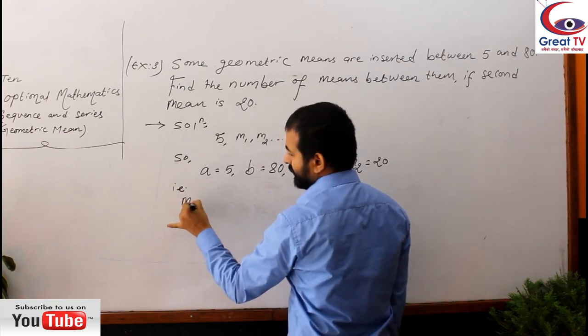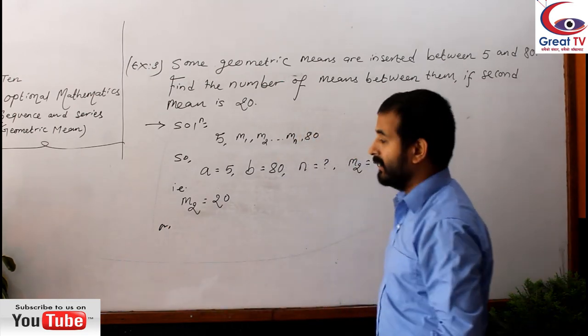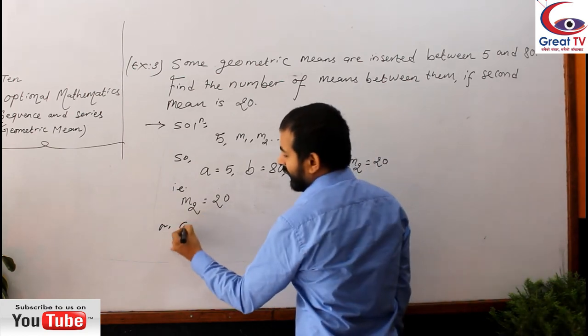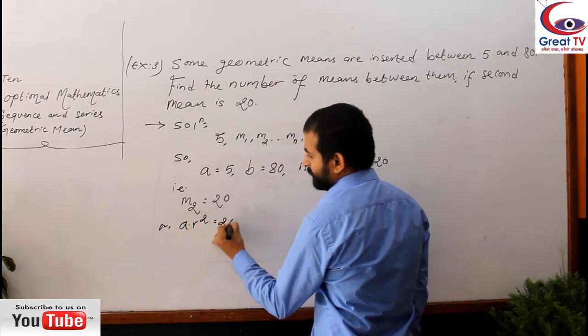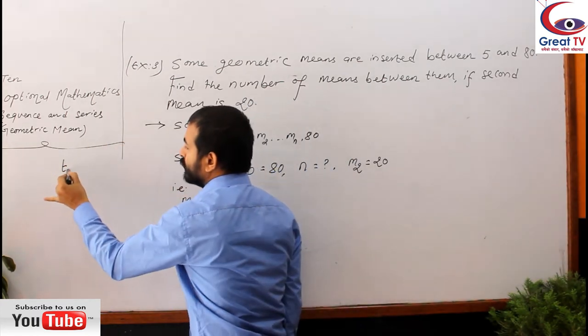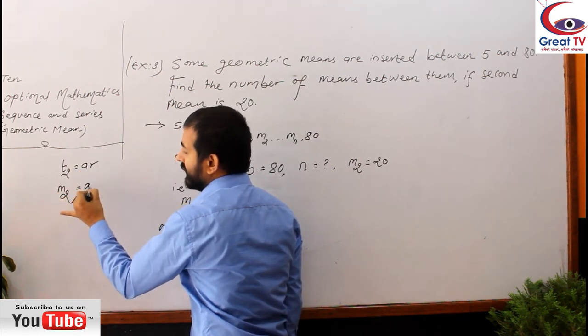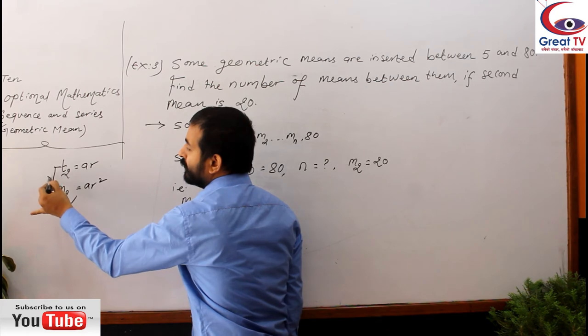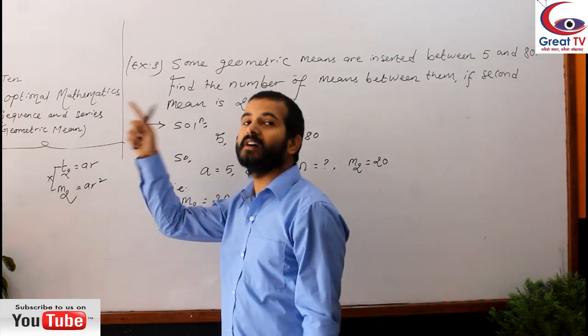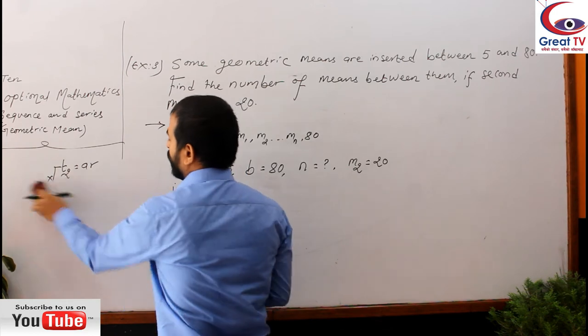That is second mean M2 equals to 20. So if you know the M2 formula, we can directly relate M2 in terms of A and R. That is A·R² equals to 20. My dear students, when you interpret term T2, it is A·R. But when you write M2, second mean, it is A·R². Don't get confused in terms and means, because they don't have the same meaning. The second term is first mean, so first mean formula will be A·R. Remember.